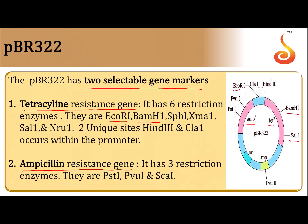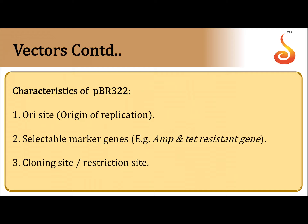Within the tetracycline gene, we can see a promoter region, and within this promoter region there are two unique sites: HindIII and ClaI. The ampicillin resistant gene has three restriction enzyme sites: PST1, PvuI, and ScaI.